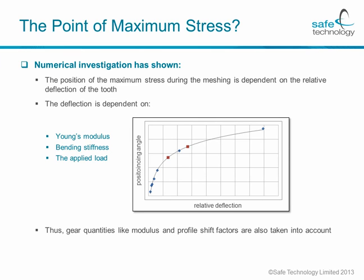What about the point of maximum stress? Numerical investigations have shown that the position of maximum stress during the meshing is dependent on the relative deflection of the tooth. This deflection is dependent on Young's modulus, the bending stiffness of the tooth, and the applied load, which allows us to produce a regression function where the relative deflection acts as a driver to calculate the positioning angle of the actual tooth as it is assembled in Abaqus CAE. These dependencies also mean that gear quantities like the modulus and the profile shift factors are automatically taken into account.